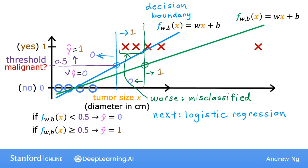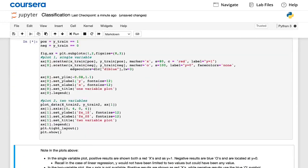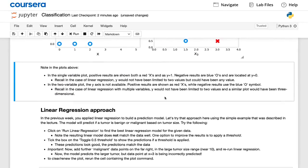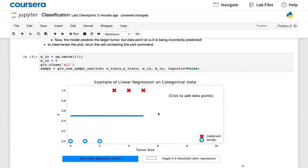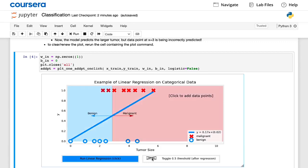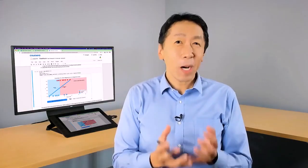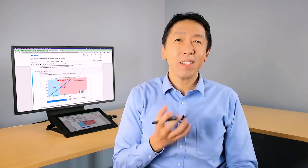By the way, one thing confusing about the name logistic regression is that even though it has the word regression in it is actually used for classification. Don't be confused by the name, which was given for historical reasons. It's actually used to solve binary classification problems where the output label y is either 0 or 1. In the upcoming optional lab, you also get to take a look at what happens when you try to use linear regression for classification. Sometimes you get lucky and it may work, but often it will not work well, which is why I don't use linear regression myself for classification. In the optional lab, you see an interactive plot that attempts to classify between two categories, and you hopefully notice how this often doesn't work very well, which is okay because that motivates the need for a different model to do classification. So please check out this optional lab and after that, we'll go on to the next video to look at logistic regression for classification.